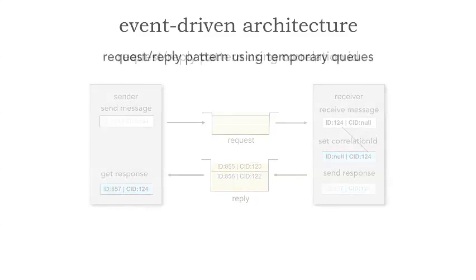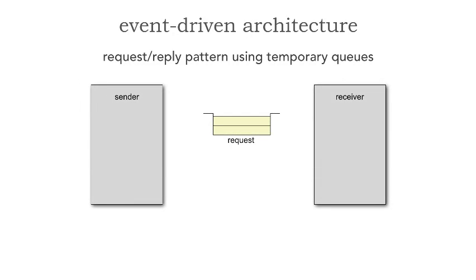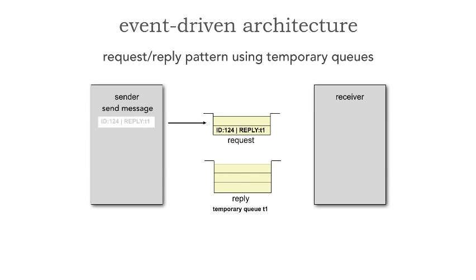There's another way you can do request-reply messaging, and that is with temporary queues — it's a lot simpler. Here, there is no response queue initially. Instead of using correlation IDs, I'll use something called a temporary queue — in other words, a reply-to field in the message header itself. I'm saying: reply to temporary queue T1, and the message broker will create this temporary queue.